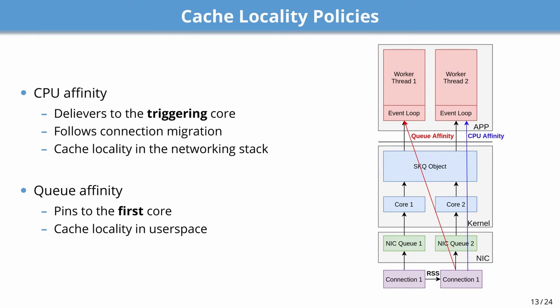The first category is cache locality policies, where we reduce cache misses. The CPU affinity policy always delivers the event to the triggering core — the core where the kernel processes the IO request. When a worker thread on the same core later accesses the IO data, the data will more likely be hot in cache. The CPU affinity policy benefits from cache locality in the networking stack and allows applications to follow connection migration. The queue affinity policy always pins the event to the first core where the event was triggered, benefiting from cache locality in user space as the same connection is always processed by the same worker thread.